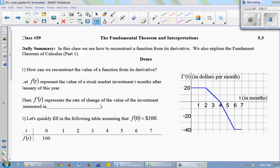We're going to let f(t) represent the value of a stock market investment t months after January this year. So the original function f is the value of the stock as a function of time. Then f'(t) represents the rate of change of the value of the investment.